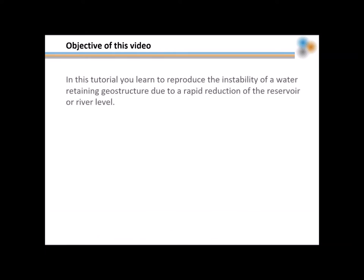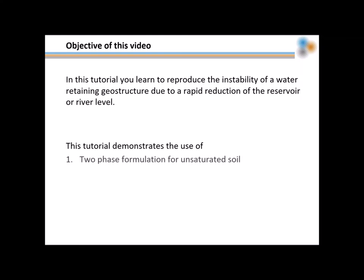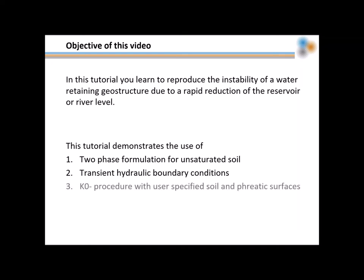In this tutorial, you will learn how to reproduce the instability of a water retaining geostructure due to a rapid reduction of the reservoir or the river level. This tutorial demonstrates the use of some new features of this version of Anura3D: first, the two-phase formulation for unsaturated soil; then, the application of transient hydraulic boundary conditions; and lastly, the K-NOT procedure with user-specified soil and phreatic surfaces.